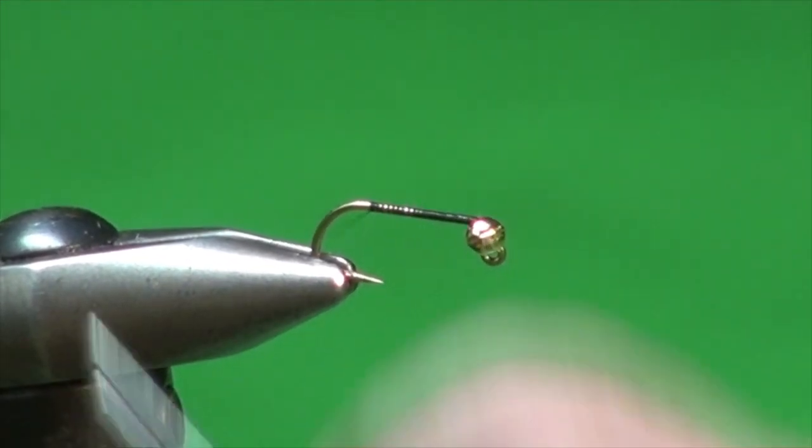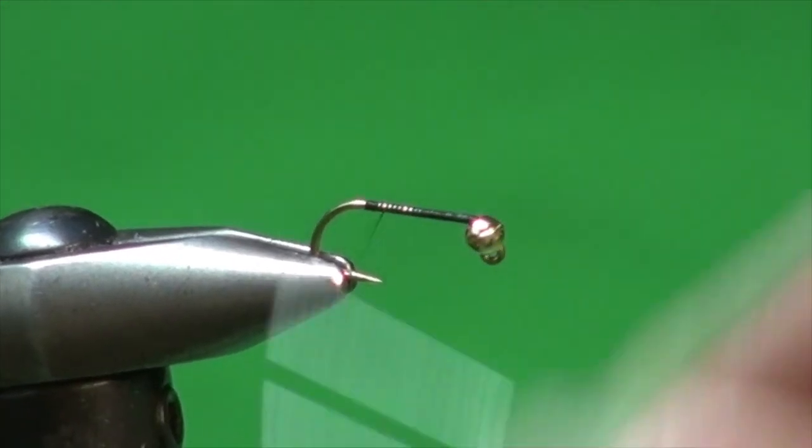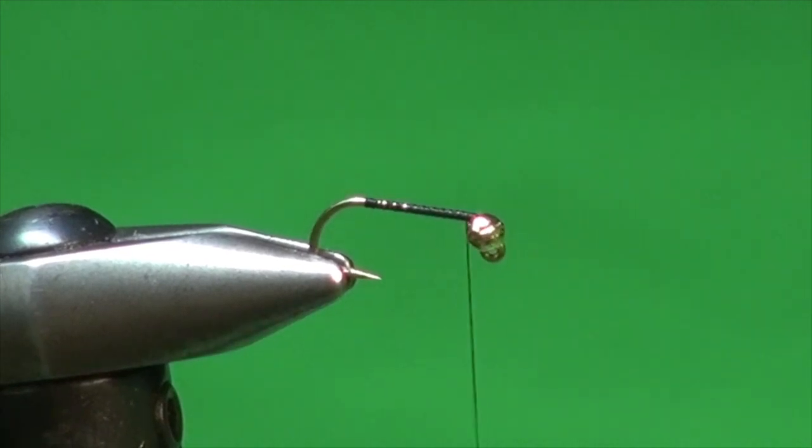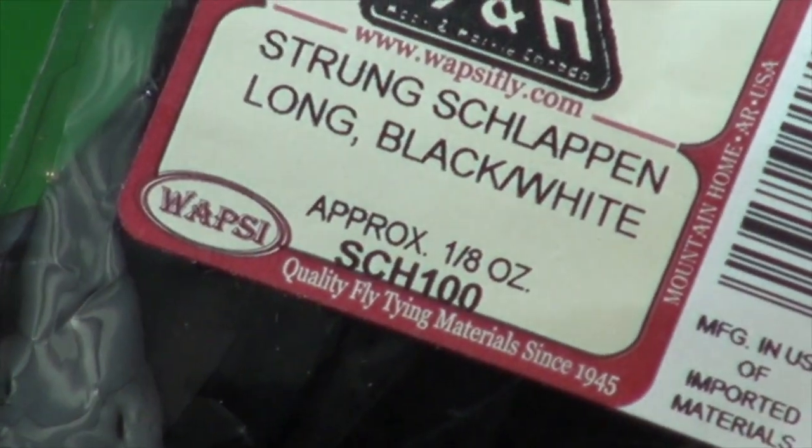We're just going to get a good base of thread down here. Right down halfway between the point and the crushed-down barb. We're going to come back right up near the hook eye. And as in so many flies that I like to tie these baby or mini-leech style, smaller leeches, instead of using traditional marabou, which I would do on a larger fly, I'm going to use the base of a black schlappen feather.